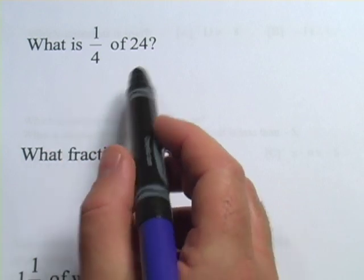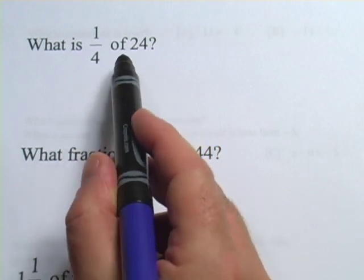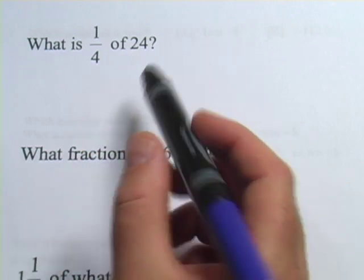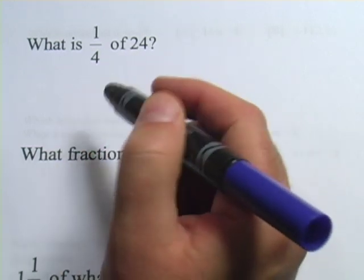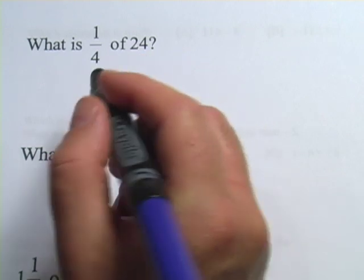This first one says what is 1/4 of 24, and you might think to yourself, oh that's easy, I know what 1/4 of 24 is. We're just dividing 24 by 4 so that's going to be 6. You've got this figured out in your head, great. I want to show you the algebra method because it will work even when the problems get more complex.